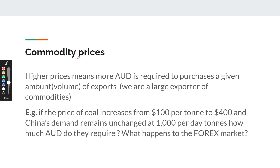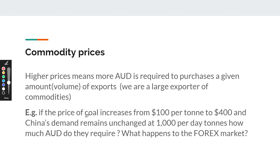The next factor is commodity prices. Australia relies heavily on commodity exports, so it's a big driver of the exchange rate. Australia is a big exporter of coal and iron ore, and the price of these commodities is determined in world markets by demand and supply. For example, the price of coal increased over 2021 and 2022 from about $100 per tonne to $400 per tonne, while we assume the rest of the world still requires the same amount of coal.